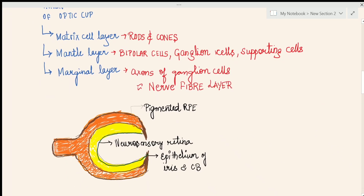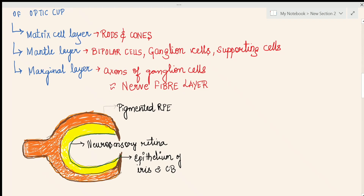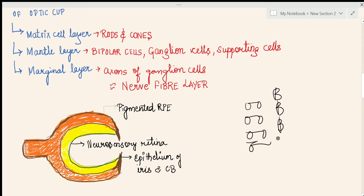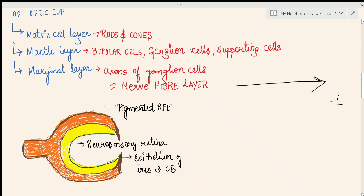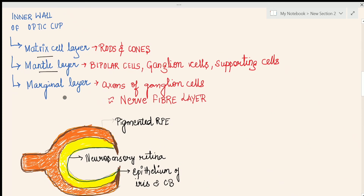In the anatomy of the retina, the arrangement follows this same order: retinal pigment epithelium, then rods and cones, then bipolar cells, then ganglion cells, and the axons of the ganglion cells form the nerve fiber layer — from outside to inside. That is how the inner part of the optic cup divides into the matrix, mantle, and marginal layers, finally forming these structures.